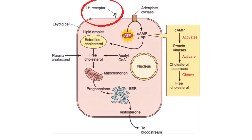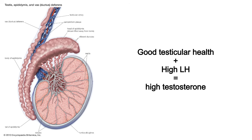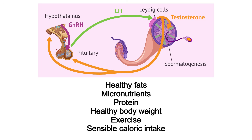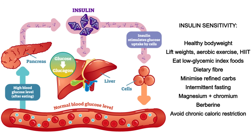Next is luteinizing hormone, which is what actually stimulates the Leydig cells in the testes to directly produce testosterone. If your testes are in good health, a high level of LH will be effective at getting them to produce lots of testosterone. Much of the advice for optimizing LH is the same as for GnRH: consume healthy fats, plenty of micronutrients, and protein; stay a healthy body weight; exercise; don't restrict calories excessively; and don't overeat or overtrain.